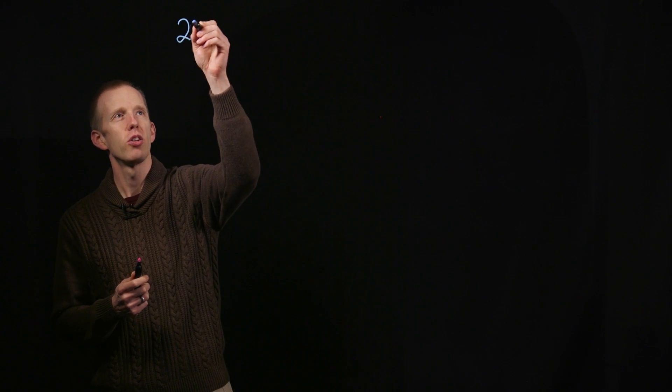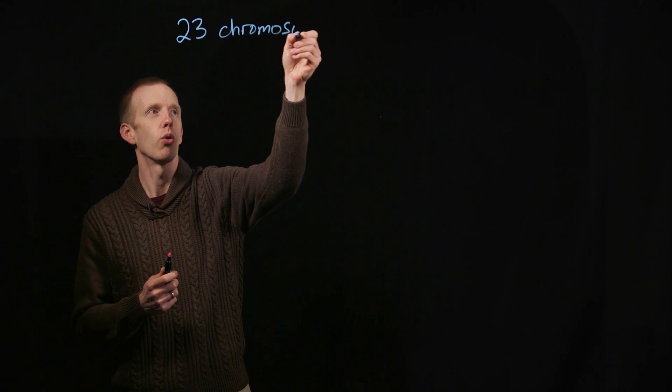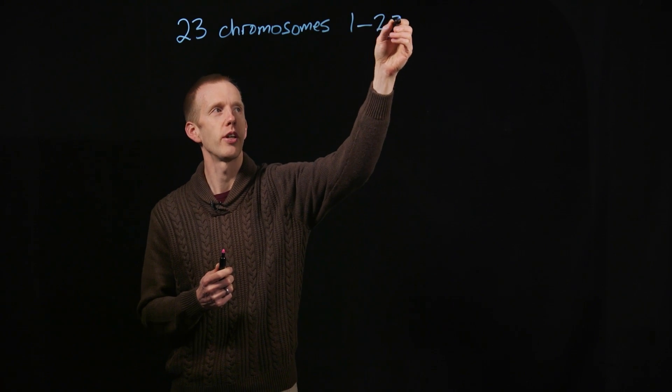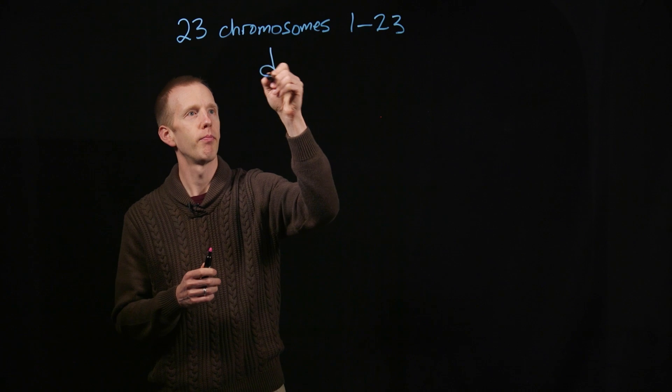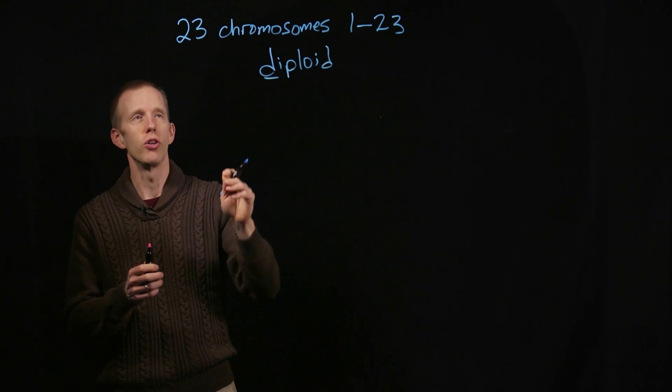So humans have 23 different chromosomes, numbered in order, largest to smallest, from 1 to 23. And humans are diploid, di meaning two.